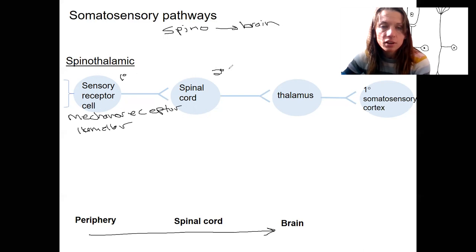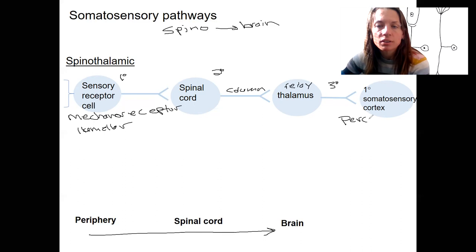This would be the second neuron that's then carrying the information. What is this thing? This is going to be a column, part of a column. It's also going to be a tract, the spinothalamic tract, in fact. And then this is going to synapse in the thalamus. Thalamus is a relay station, which is going to relay the information. This is our third neuron to the primary somatosensory cortex. This is where perception happens.